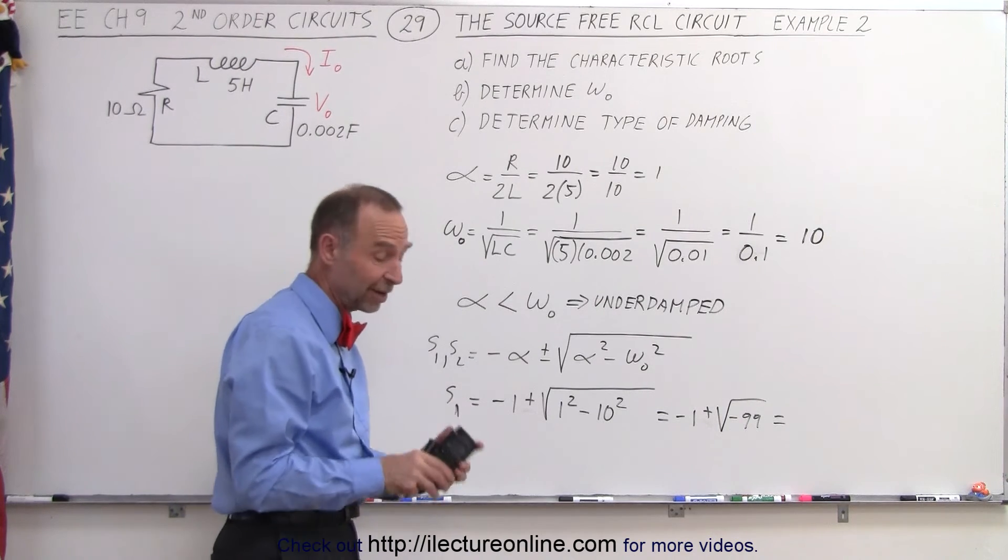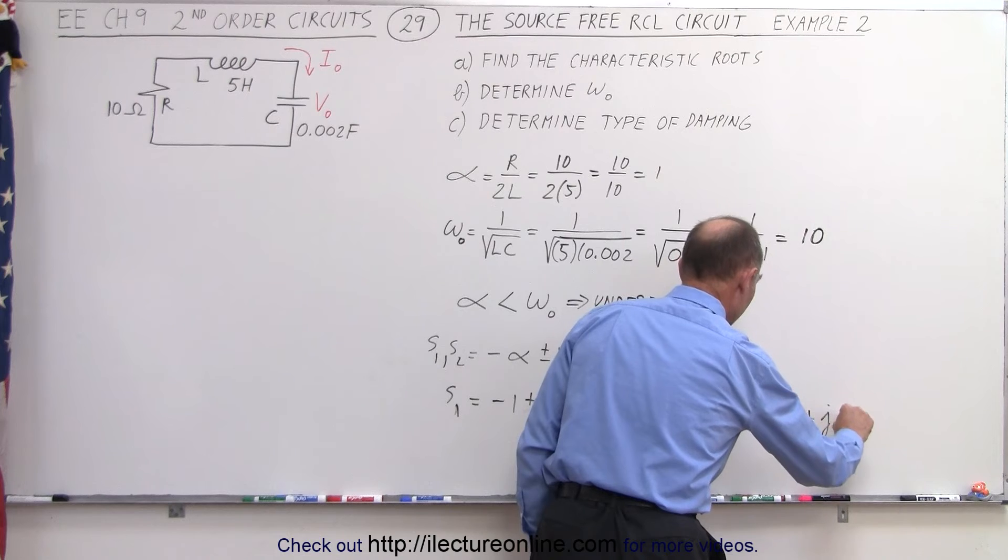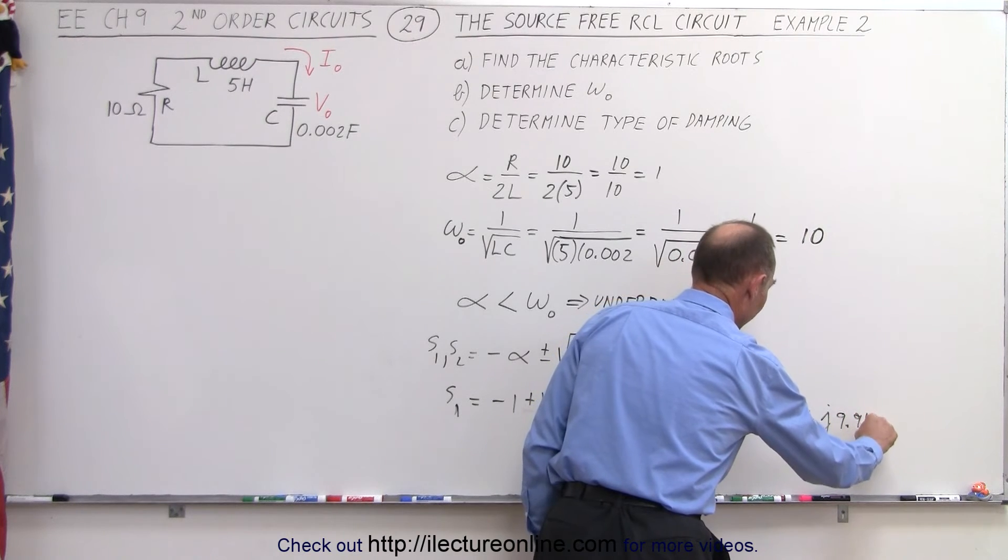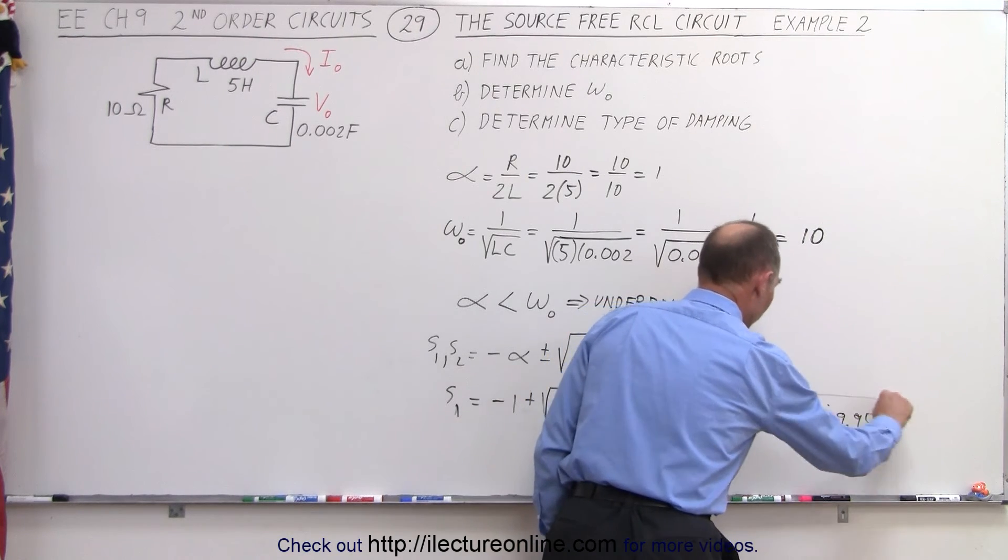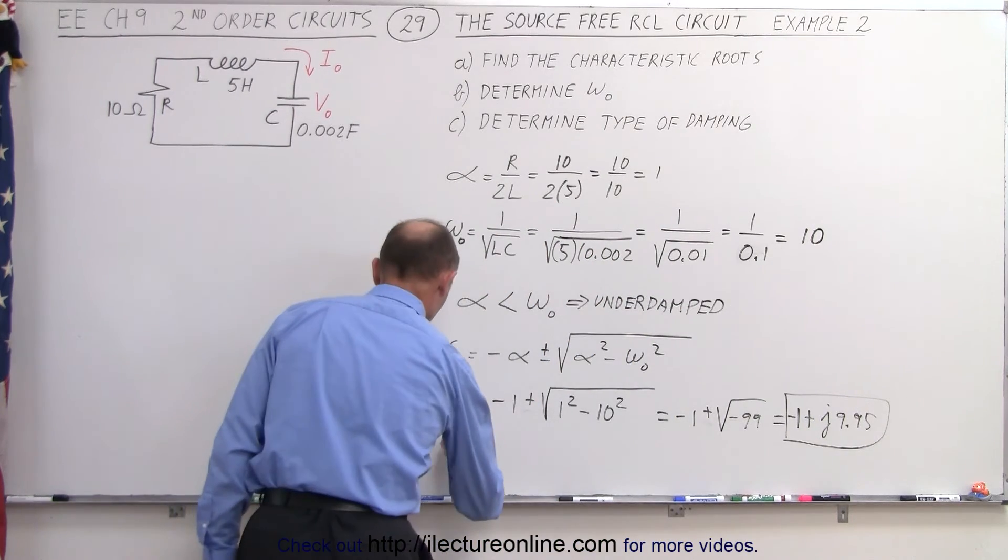Well, 9.95, that's good enough. So this is going to be negative 1 plus J9.95. So that would be S1, and notice that is indeed a complex number.